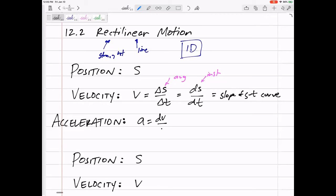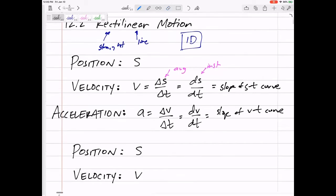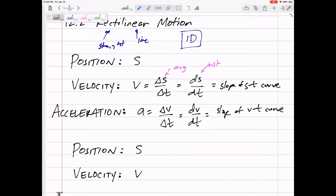Acceleration is the derivative of velocity. Well, sorry, let me first, let's say the average acceleration is the change in velocity over the change in time. But the instantaneous acceleration would be the derivative of velocity with respect to time. And so, this would be the slope of the VT curve. Slope of the VT curve. Alright. That's easy.